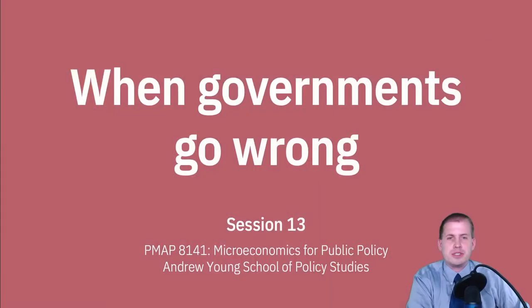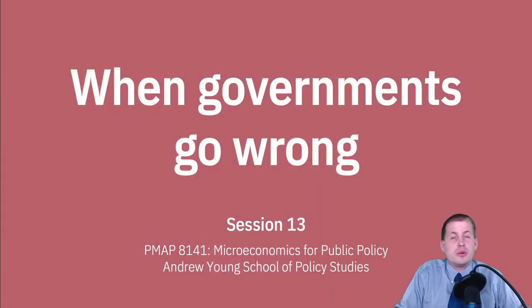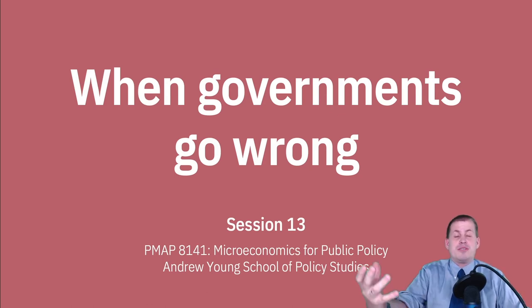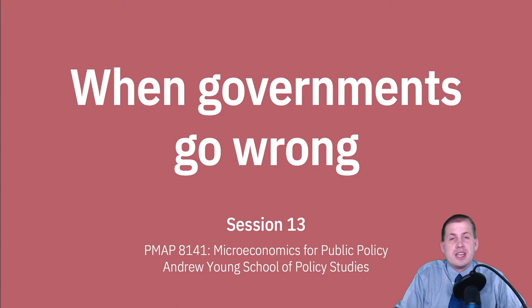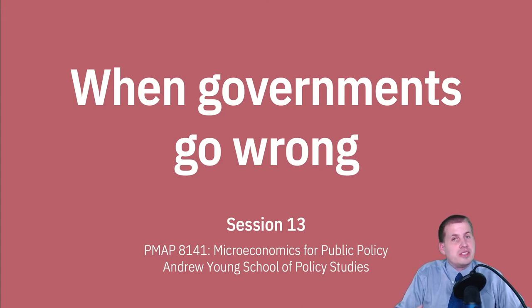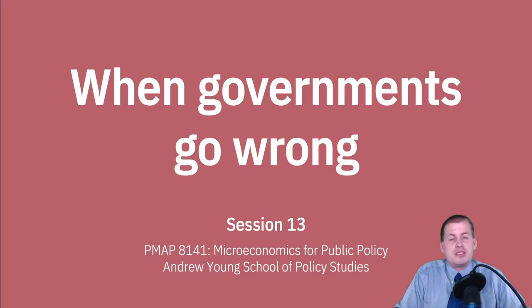Let's go ahead and switch over to the slides and get started. So we're talking about when governments go wrong. So far throughout the semester we've been talking about how great governments are — how their whole purpose is to provide public goods, they tax, they try to fix monopolies, they try to fix externalities and provide information, fix information asymmetries. We have mentioned that when there is taxation it causes deadweight loss and we don't like that, because it makes markets less efficient.